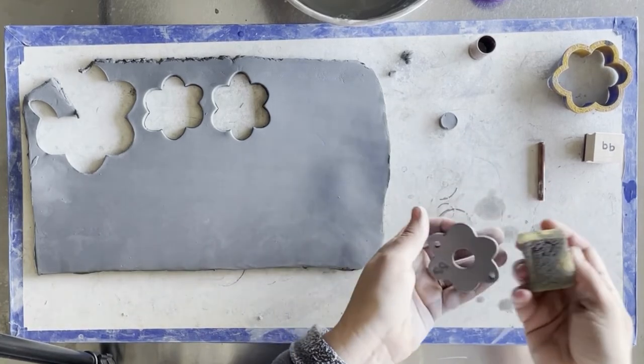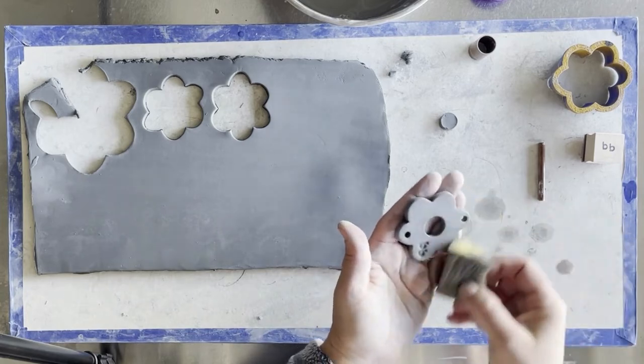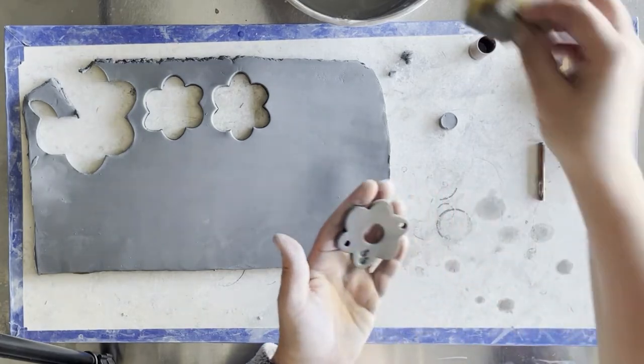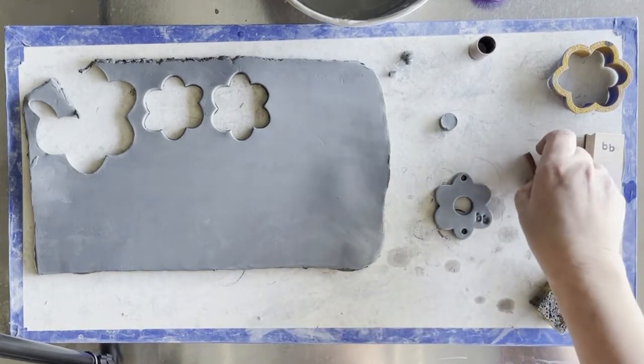Once that's complete, flip it over to the front, give it a quick wipe down to make sure that it's all cleaned up. And that is the end of the creation of the mini bell.